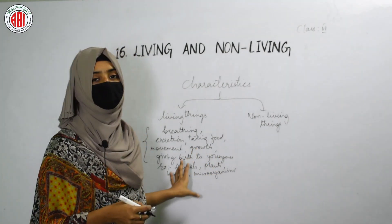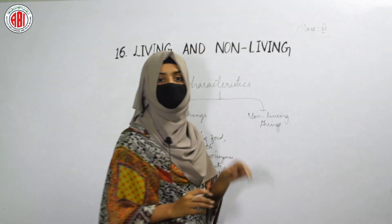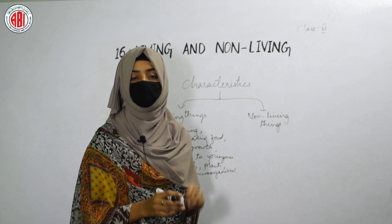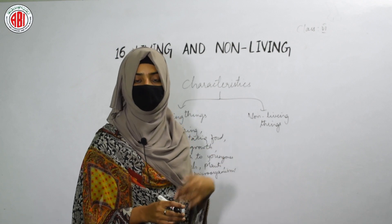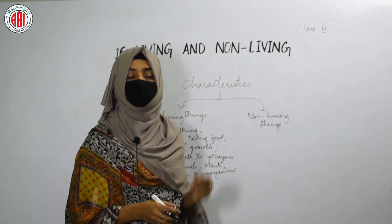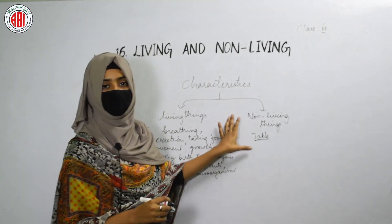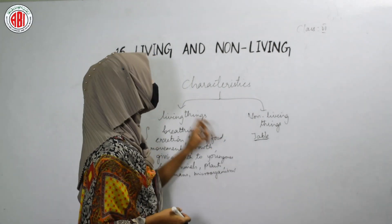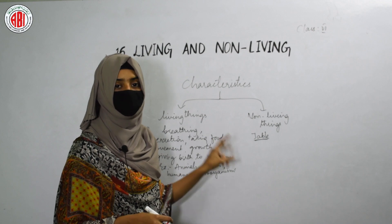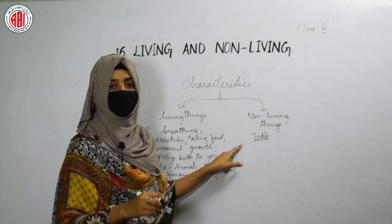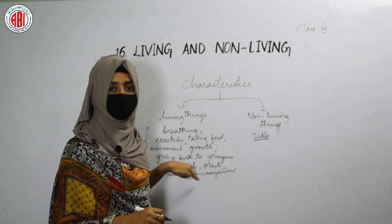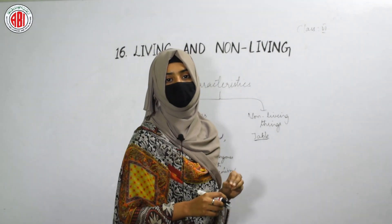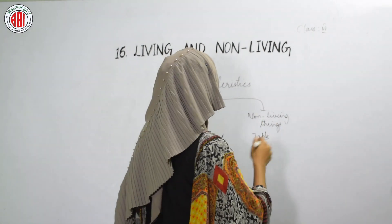Things which do not possess these characteristics are called non-living things. For example, a table is a non-living thing because it does not breathe, does not take food, does not reproduce, and does not move from one place to another. It does not show any movement. That is why we term the table as a non-living thing. Anything which does not possess all these characteristics can be called a non-living thing.